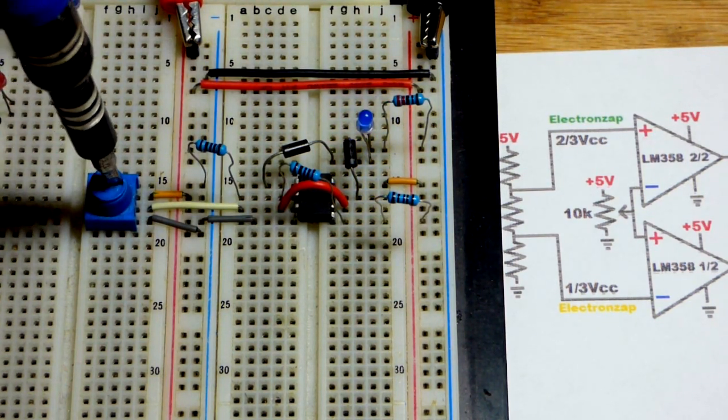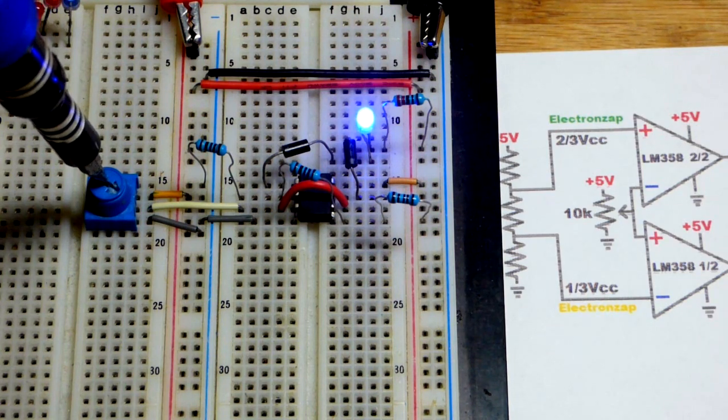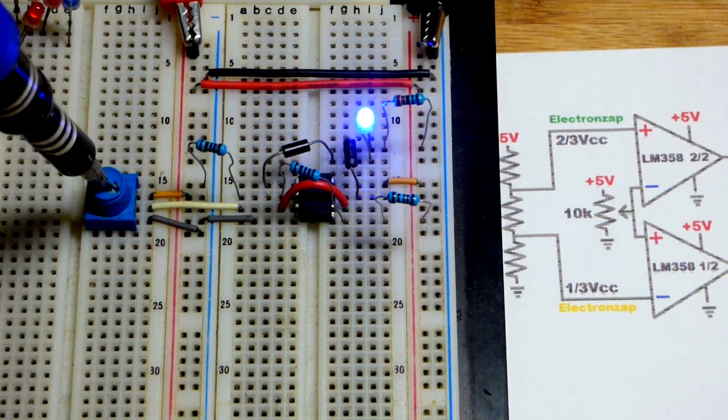We come down. Now we go to the other side of the window. We go below one-third of the supply voltage, again the output goes low.